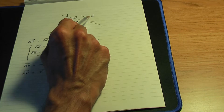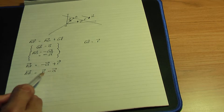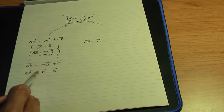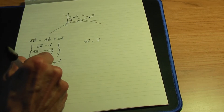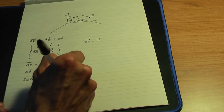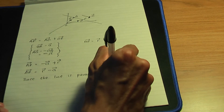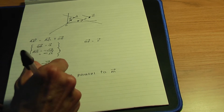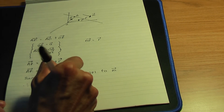Remember the idea of this vector m — m is a vector parallel to your line. If two vectors are parallel, one of the vectors is going to be a scalar multiple of the other. Since this vector m is parallel to the line, that implies AP is equal to a scalar lambda times the vector m.